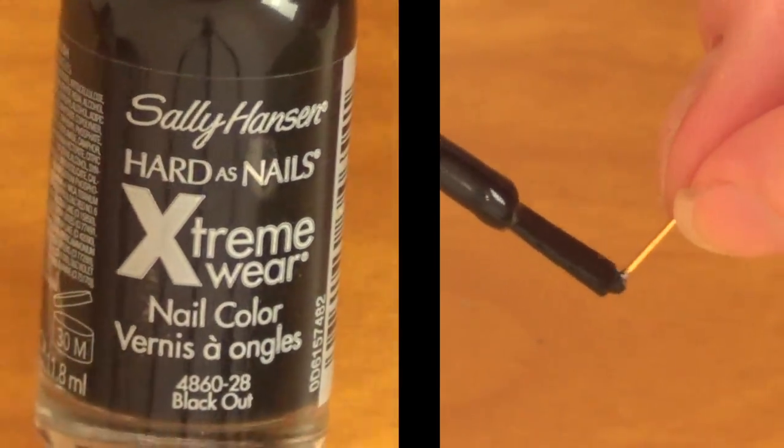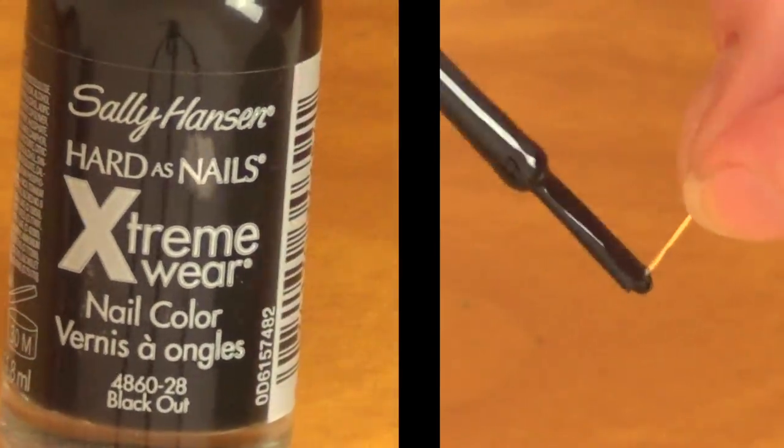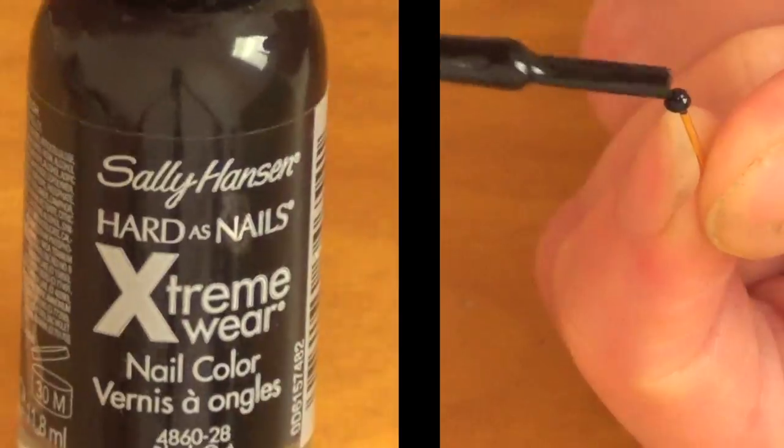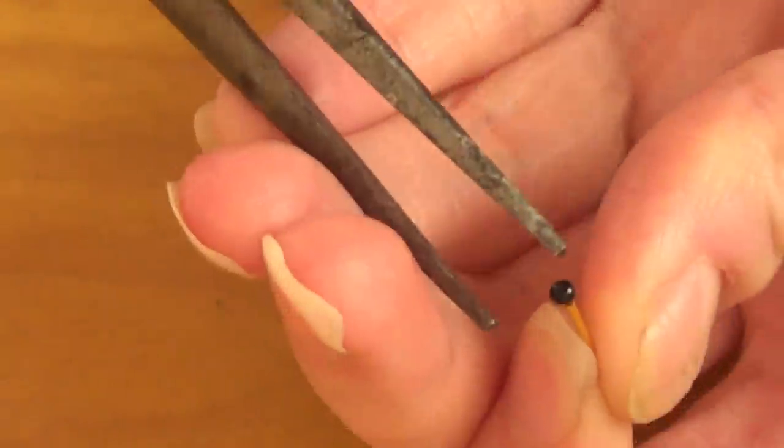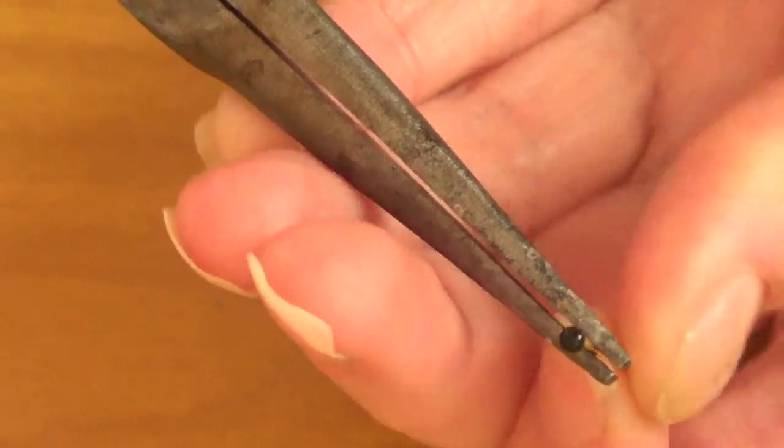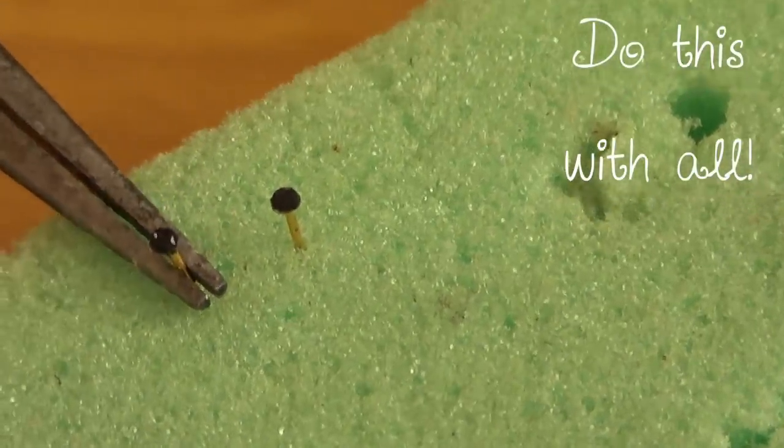For the black one, I'm going to be using this nail polish called Black Out by Sally Hansen. I'm going to grab it with my pliers and do the same thing that I did before. Like that in there.